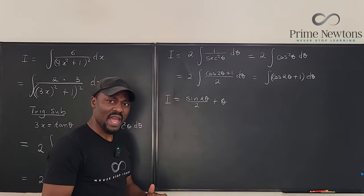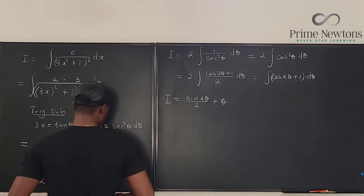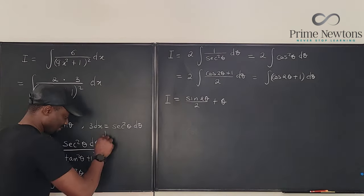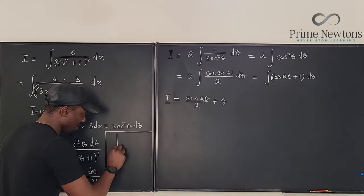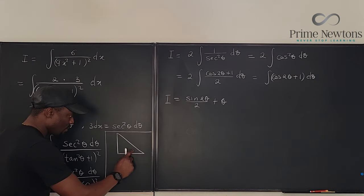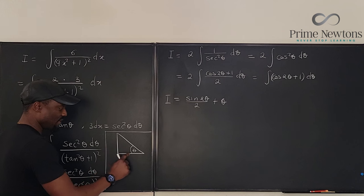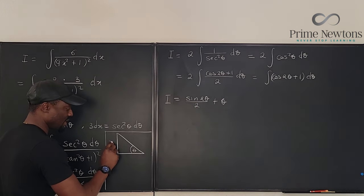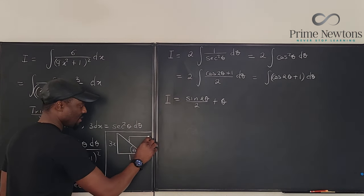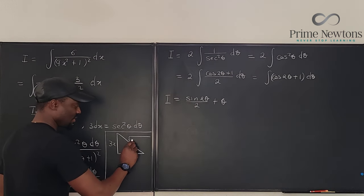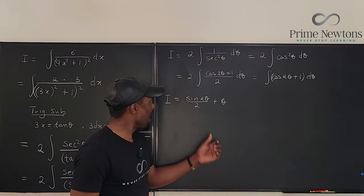So how did we get to theta from x? We have to go back again to the trig substitution. Let's recall that we said that tan theta is 3x. So if we have a right triangle with this theta here, the tangent of theta is 3x which is opposite over adjacent. Remember 3x is 3x divided by 1. So this is 3x and this is 1. So we can find the longest side which is the square root of this squared plus this squared, which is going to be 9x squared plus 1.